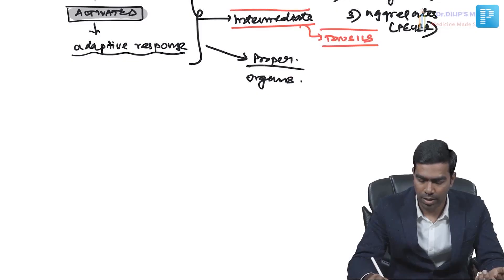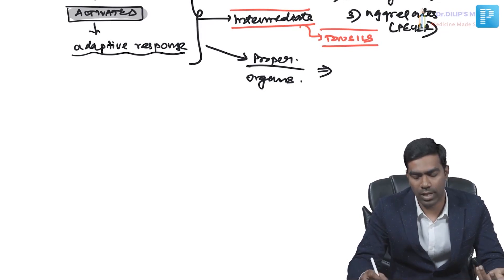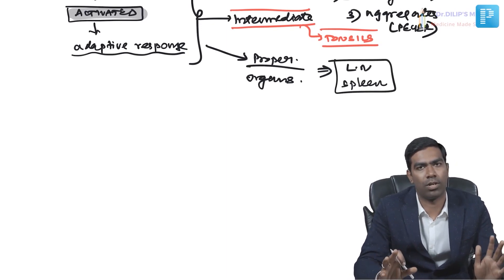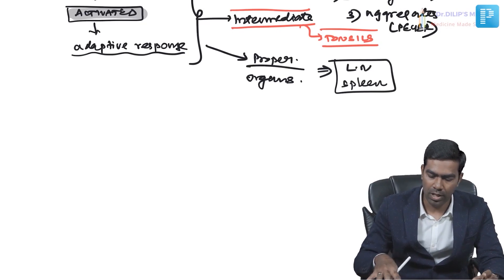The intermediate group consists of the tonsils — between simple tissues and proper organs. There are four groups: pharyngeal, palatine, tubal, and lingual tonsils, forming Waldeyer's ring, which guards the entry of organisms at the oropharyngeal and nasopharyngeal routes. The proper organs are only two: the lymph node and the spleen.